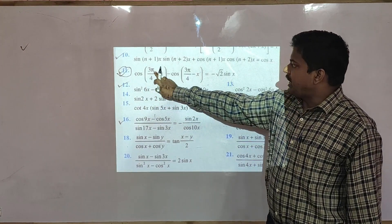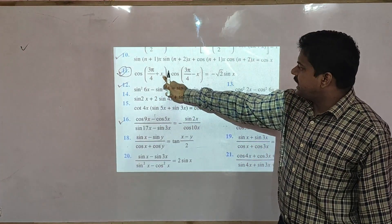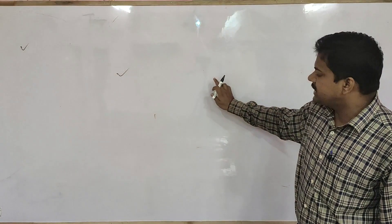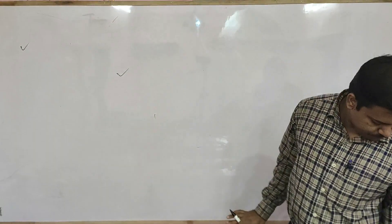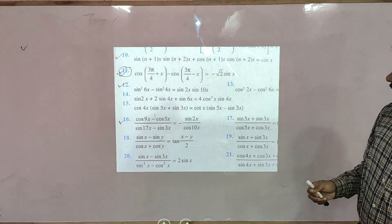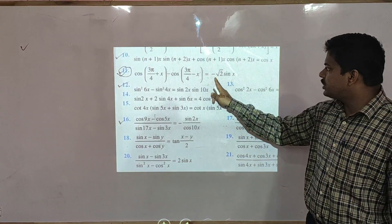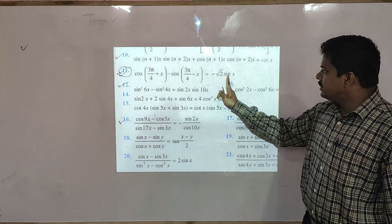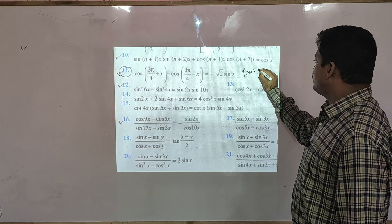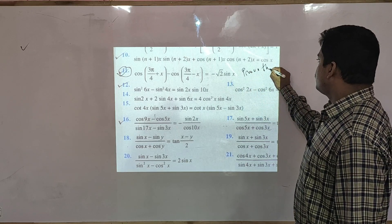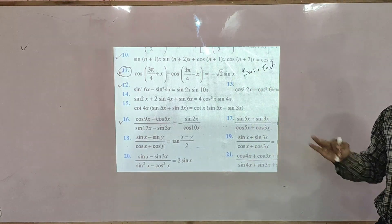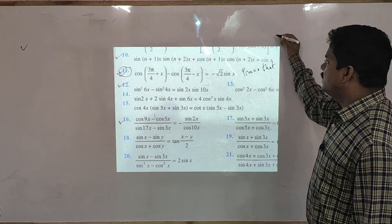cos of (3π/4 + x) minus cos of (3π/4 − x) is equal to what? This is our question — it is equal to root 2 sin x. He wants to prove that. So we write this question.